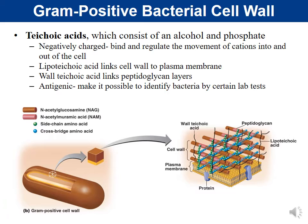Teichoic acids are negatively charged, and they help to bind and regulate the movement of cations — positively charged ions — into and out of the cell. There are two main categories: lipoteichoic acids, which link the cell wall into the cell membrane by embedding in the lipid of the cell membrane, and wall teichoic acids, which are not embedded in the cell membrane but instead link those peptidoglycan layers together.